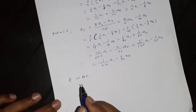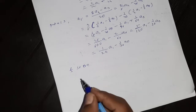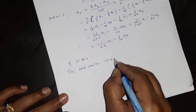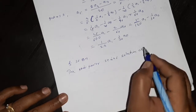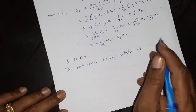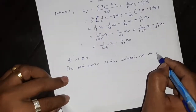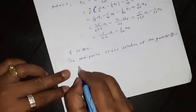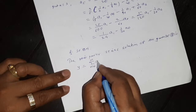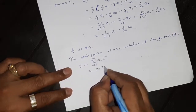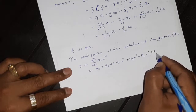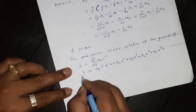Similarly, find a6, a7, and therefore the power series solution of the given differential equation is y equal to the summation as n runs from 0 to infinity of aₙ xⁿ, that is a₀ plus a₁x plus a₂x² plus a₃x³ plus a₄x⁴ plus a₅x⁵ and so on.